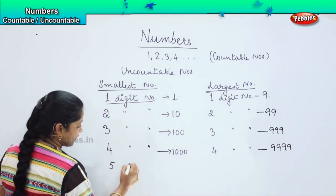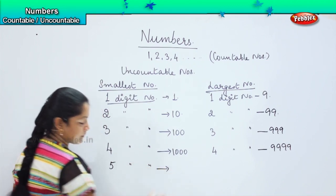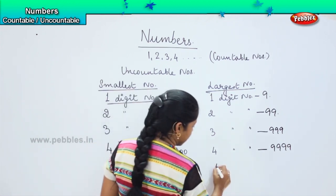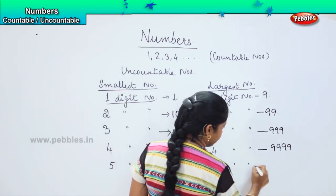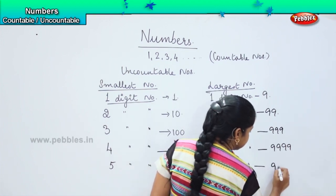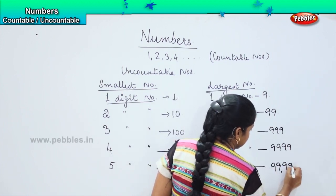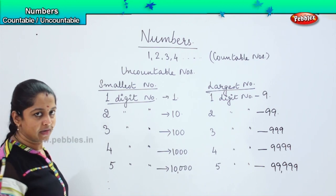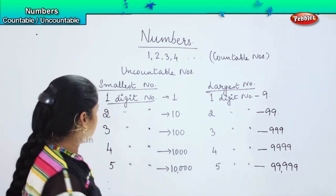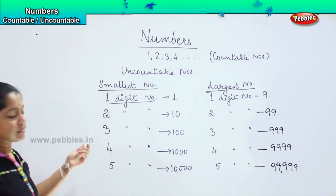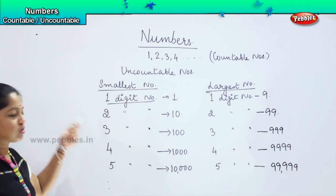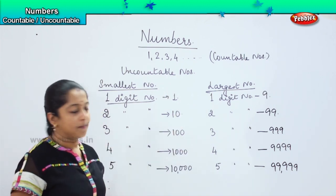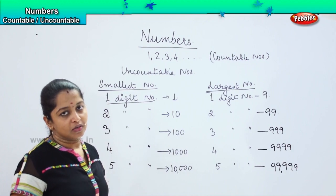What is my smallest five digit number? Very good, it is ten thousand. And what will be my largest five digit number? It is ninety-nine thousand nine hundred and ninety-nine. So the list goes on like this. We have found out what will be my smallest one digit number, two digit number, and so on, and also what will be my largest one digit number, two digit number, and so on.